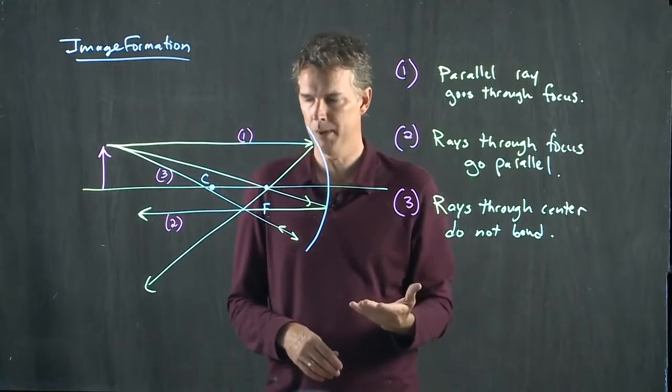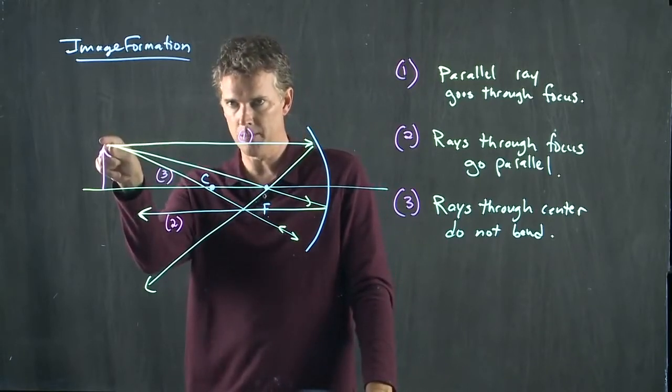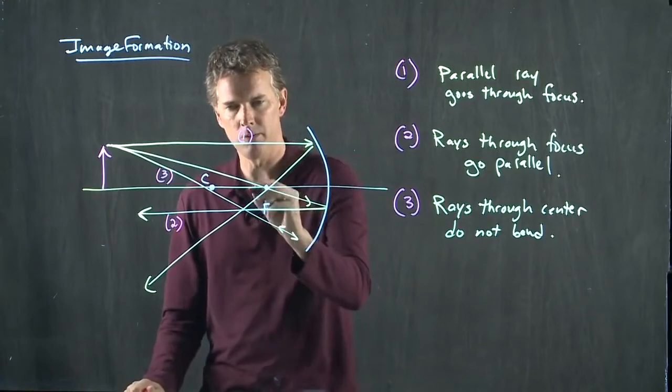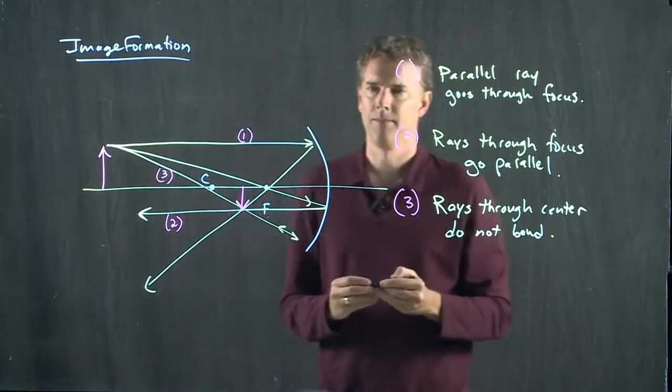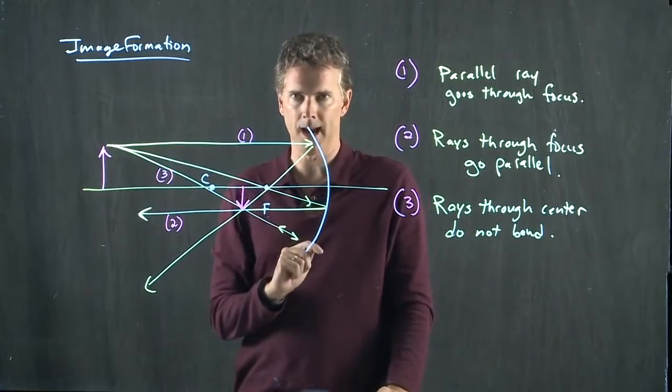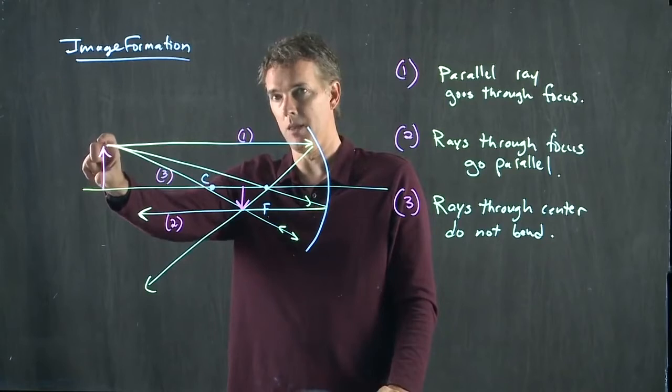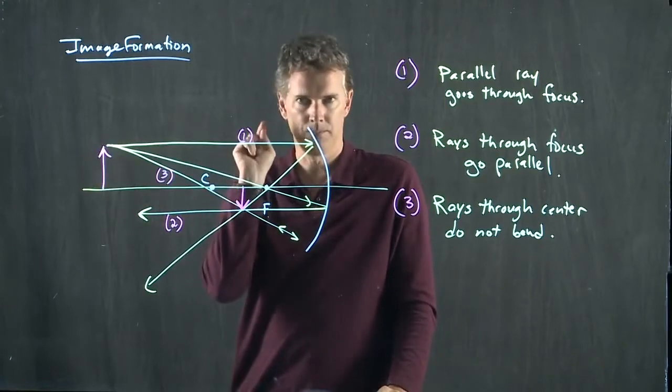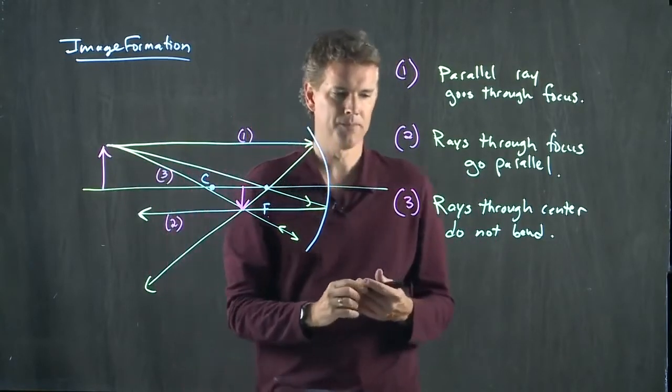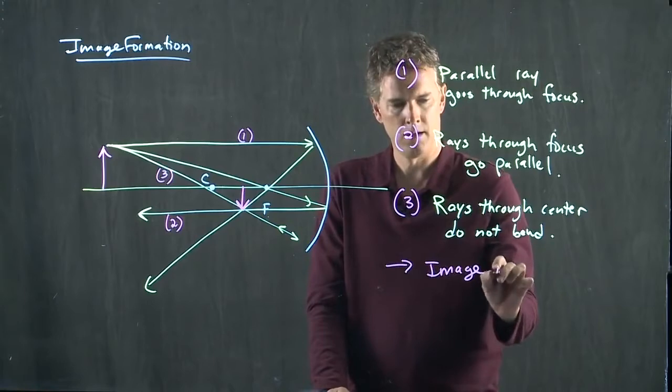So, where is the image in this picture? The image is where the rays all meet. They started there at the tip of the object. They went out in all these different directions, and then they came back together right there. So that's where the tip of the object is. The base of the object is on the optic axis. So this is a nice way to draw it. When you draw the object and you put it on the base of the optic axis, its image still has its base on the optic axis, and so all you really need to figure out is where is the tip of the image. And so this is the final point. Image is where they meet.